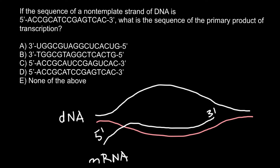That means this complementary strand of the DNA would have the 5' end here and the 3' end here. The other strand of the DNA, going in the different direction, would have the 3' end here and the 5' end here. So as you understand, this is the template strand of the DNA.